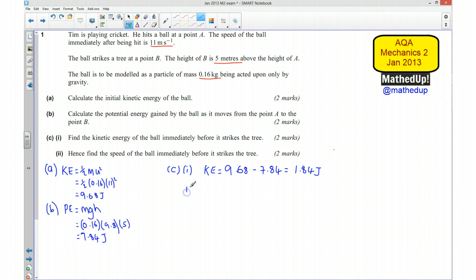Part two. It says, hence find the speed of the ball immediately before it strikes the tree. Well, if the kinetic energy at this point is 1.84 joules, I can say that half mv squared, so half times the mass times the final velocity squared is going to be equal to 1.84.